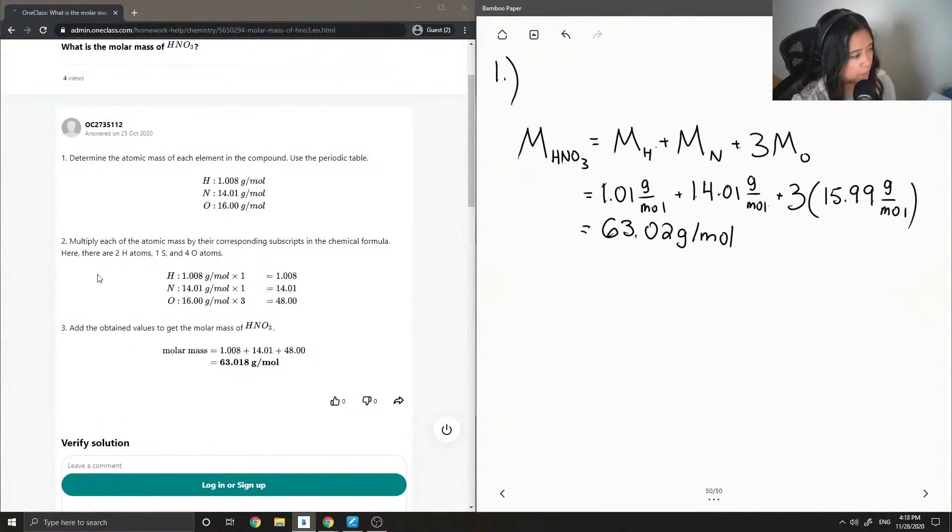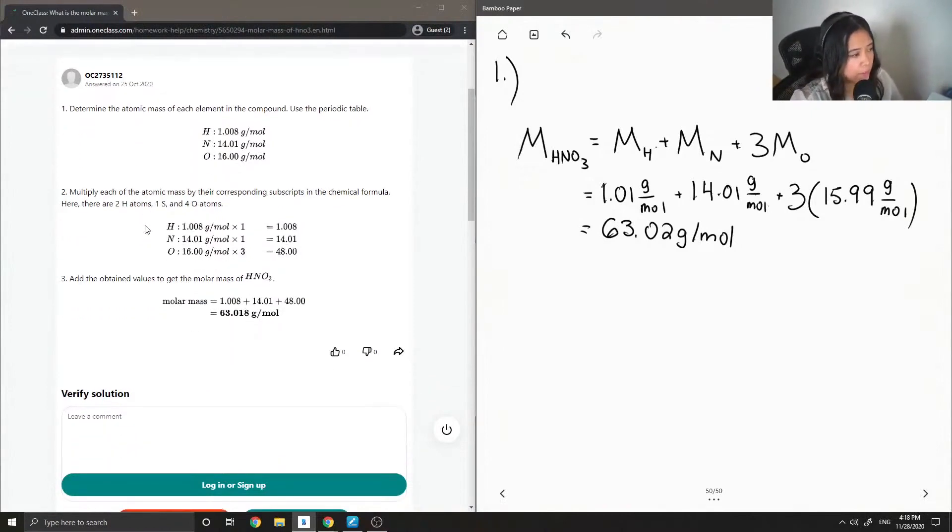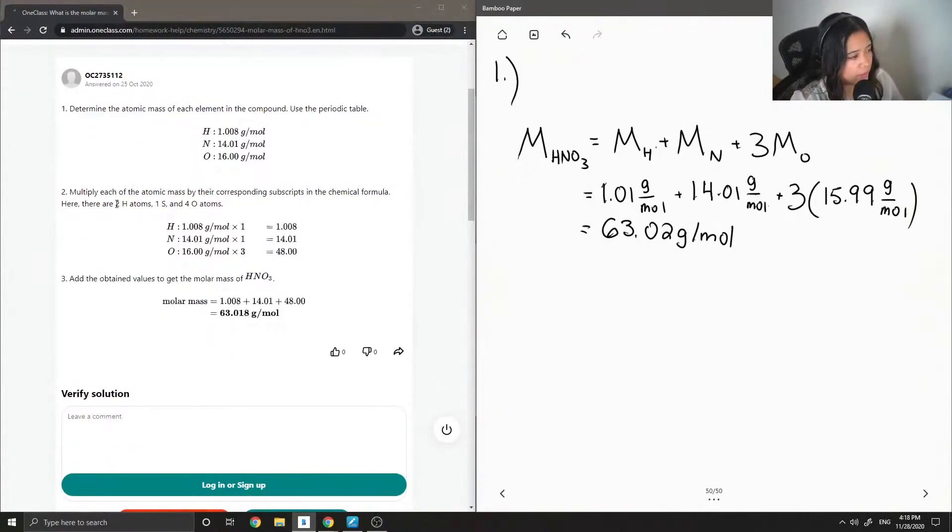Then you want to multiply each of the atomic masses by their corresponding subscripts in the chemical formula. So here there are, I guess they mean one hydrogen atom, one nitrogen atom, and three oxygen atoms. So they just messed up a bit there.